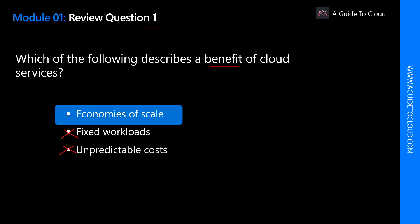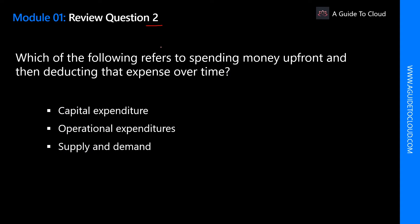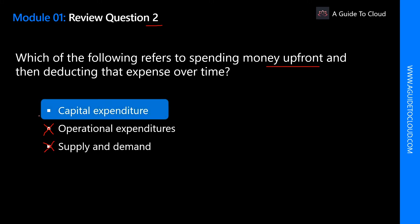Question 2: Which of the following refers to spending money upfront and then deducting that expense over time? We need to find the type of IT funding model. Operational expenditure is definitely not correct — OPEX is where you only pay for what you use, so you don't pay upfront. Supply and demand is a different concept altogether. The right answer is capital expenditure.